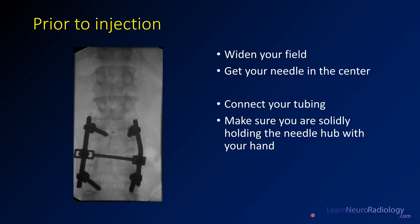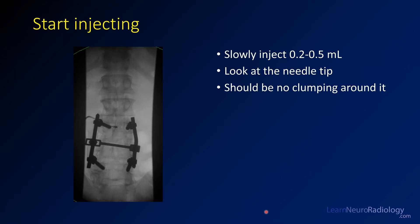Here I'm showing you an image of a patient who has hardware. You've got your needle in place, you've taken the stylet out, and you see flow of CSF. What you want to do is widen your field of view craniocaudally, connect your tubing, and anytime you make a connection with your needle, make sure you're solidly holding the needle hub with your hand — the easiest way to make a mistake is to move the needle either too deep or too shallow while making your connections. As you're injecting, slowly inject just a little bit, and you should not see any clumping around the needle tip.